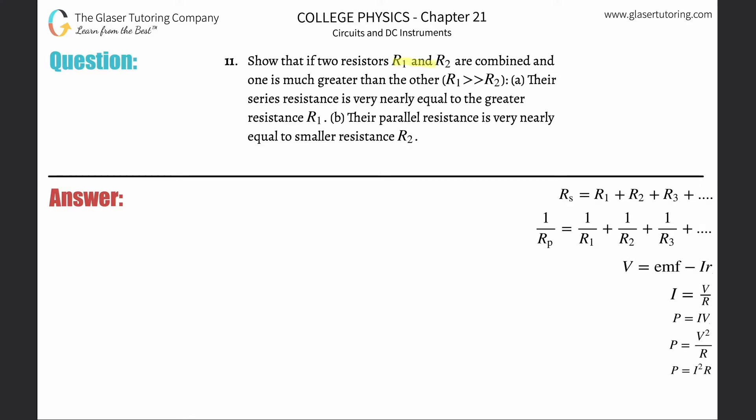Number 11. Show that if two resistors R1 and R2 are combined and one is much greater than the other, meaning R1 is tremendously larger than R2, that letter A, their series resistance is very nearly equal to the greater one.